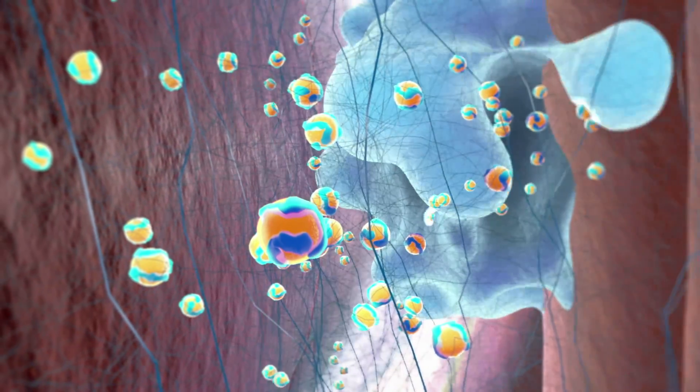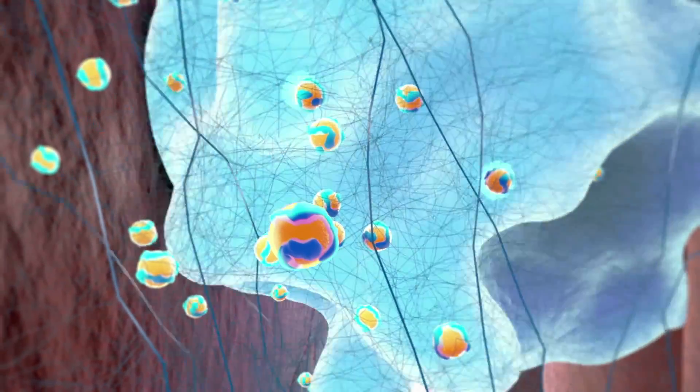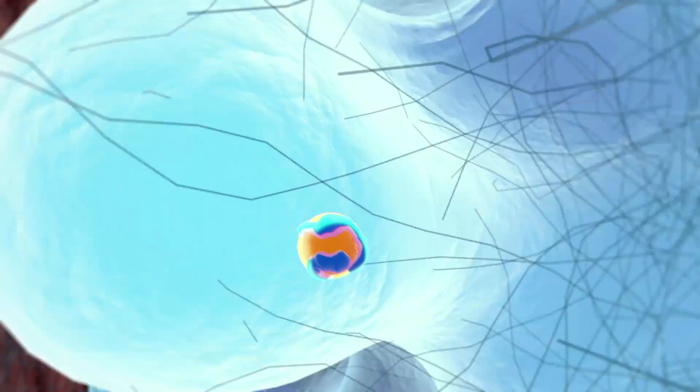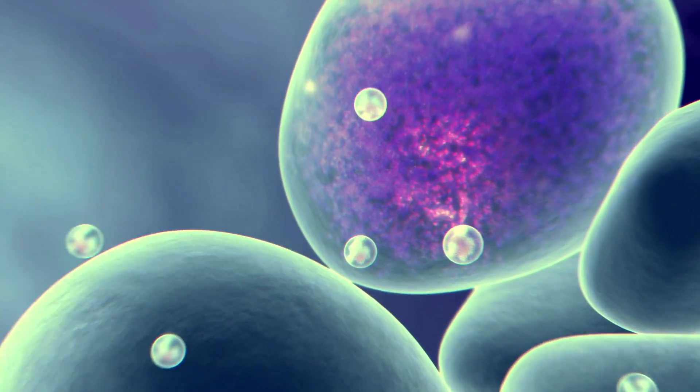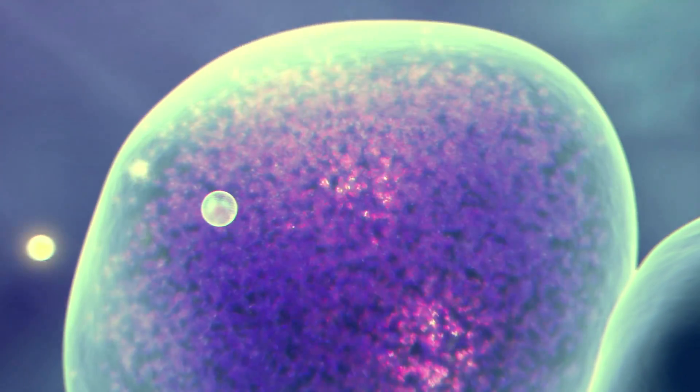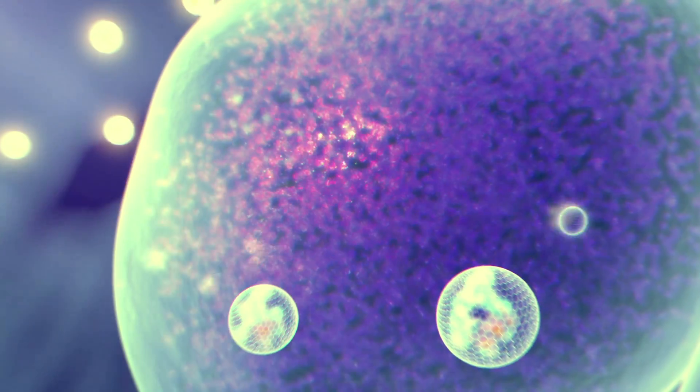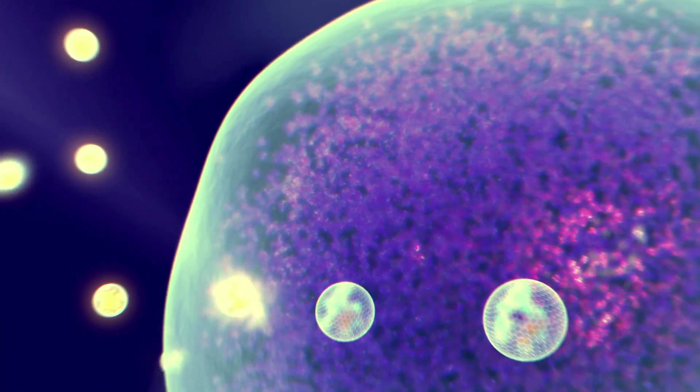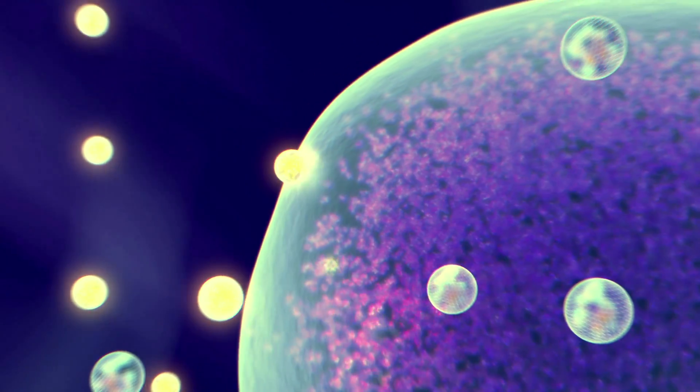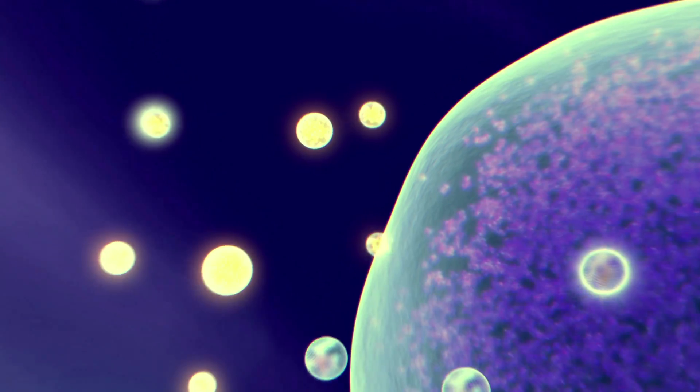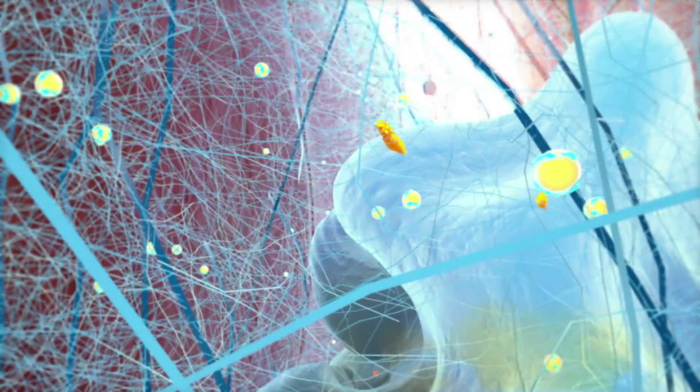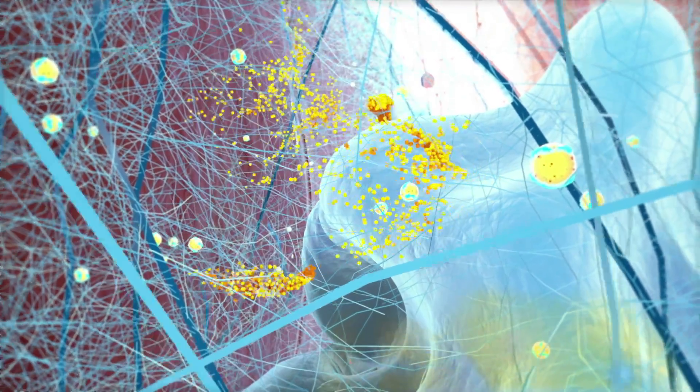White blood cells called macrophages clear these stuck particles by absorbing them and processing them in compartments called lysosomes. Here the particles are broken down into their constituent parts for reclamation or disposal. Once the enzymes have done their work, the reclaimed cholesterol is returned to the blood.